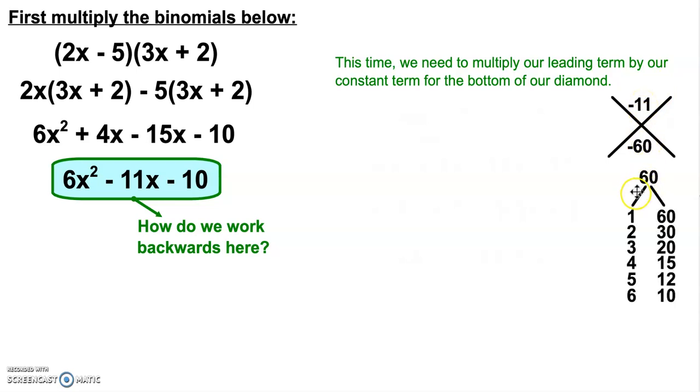So the factor tree for 60, we know because it's negative that one of our numbers needs to be negative. And because our top number is negative, we know our larger numbers have to be negative. So if my larger numbers are negative, the only combination that works to give me a negative 11 is 4 and negative 15. These are going to be what we're going to split the middle with.